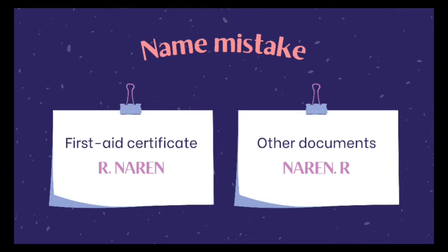For easier understanding, let's assume a condition where there is a name mistake in my document. The mistake is in my first aid certificate — the name has been mentioned as R. Narain, but in all other documents my name has been mentioned as Narain R. Now I have received a query from DGMS stating that my name in the first aid certificate is entered wrongly.